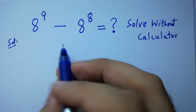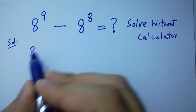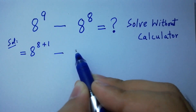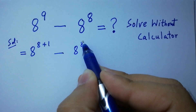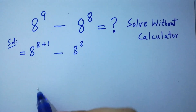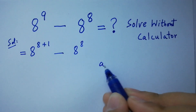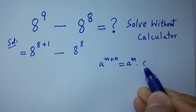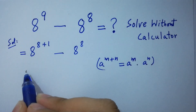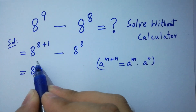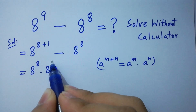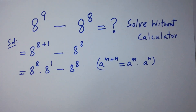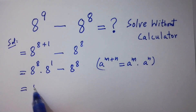This is the same as 8 to the power 8 plus 1, minus 8 to the power 8. Since 8 plus 1 is equal to 9, and as we know, a to the power m plus n equals a to the power m times a to the power n, it will be 8 to the power 8 times 8 to the power 1, minus 8 to the power 8. Here, 8 to the power 8 can be common.